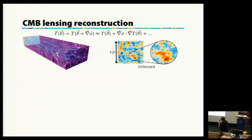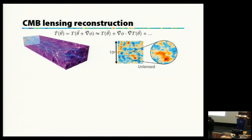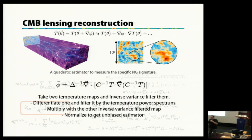CMB lensing: the lensing effect is a deflection of photon paths in large-scale structure gravitational wells — a remapping of the observed temperature anisotropy. This remapping goes as the gradient of the lensing potential, which is the map I just showed. The effect is small, only a 2.5 arcminute effect coherent on degree scales, which is why we can measure it. Doing a Taylor expansion, what we're measuring in the temperature anisotropy is a mix between the primordial temperature and its gradient, mixed with the gradient of the lensing potential.